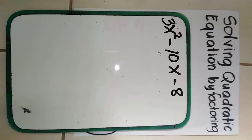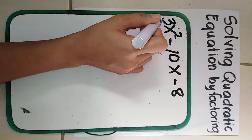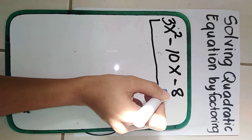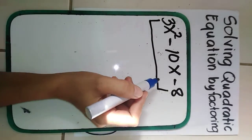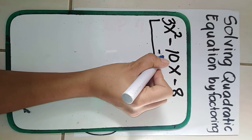Another example. We have 3x squared minus 10x minus 8. In our first example, the numerical coefficient of x squared was equal to 1. But now we have a numerical coefficient equal to positive 3. Recall the factoring lesson for ax squared plus bx plus c where a is not equal to 1. First, we find the product of a and c. We have 3 and negative 8, so 3 times negative 8 is negative 24.